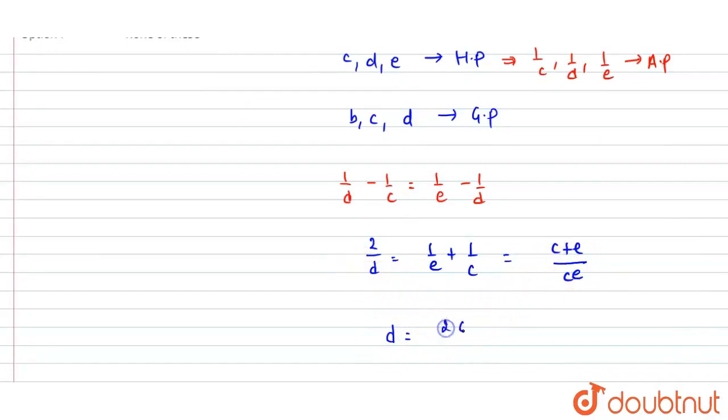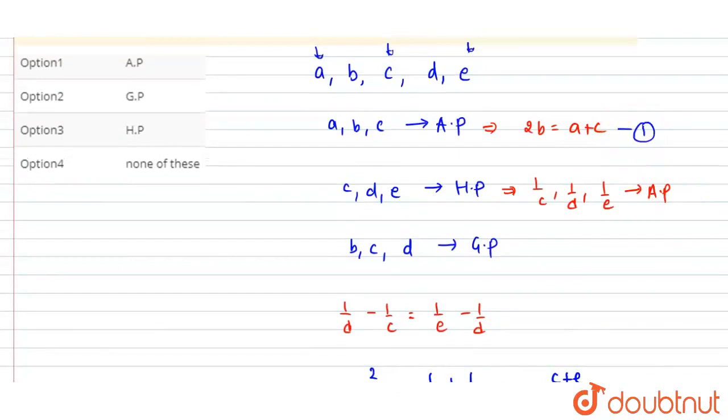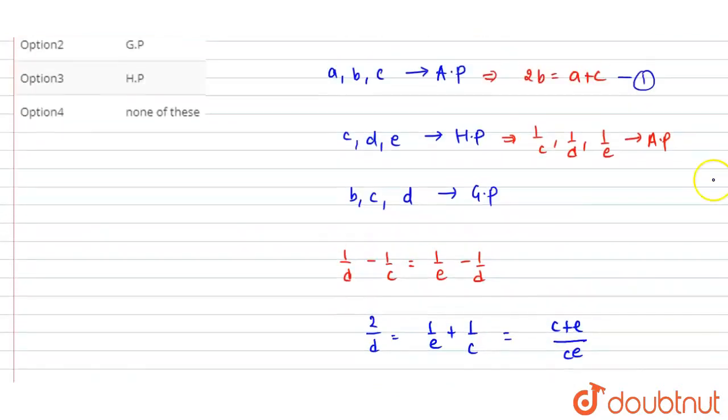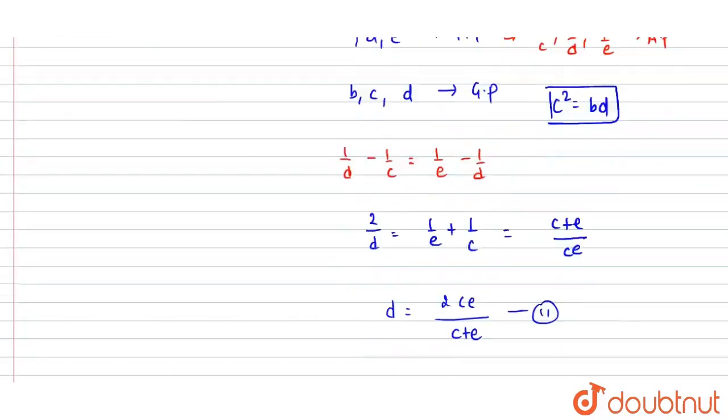This means D, how much is this? Cross multiplication. So how much will it come here? 2CE divided by C+E. So this will be our third equation. Let's consider the first equation and this is the second equation.